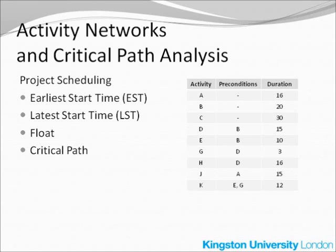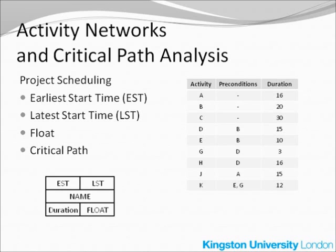One more piece of information in this table is the duration for each activity. This table will be used directly to create the activity network, in which every activity will be shown in the form of a node. This node is a bit complex. For every node, you put its name or label and four pieces of information: the duration in the lower left-hand corner, then going clockwise, EST — earliest start time, LST — latest start time, and finally float.